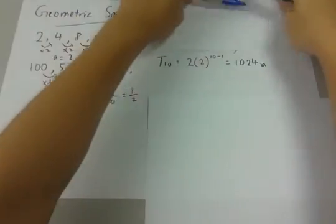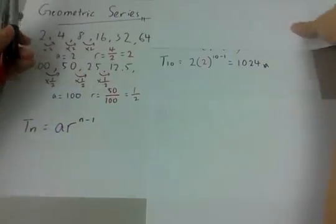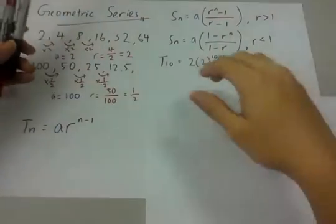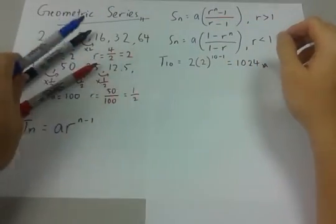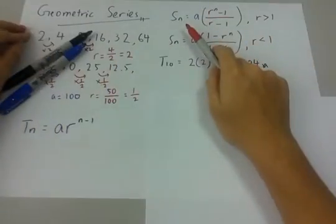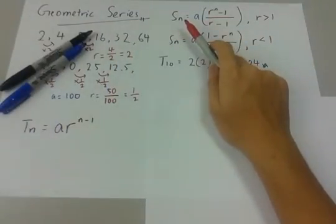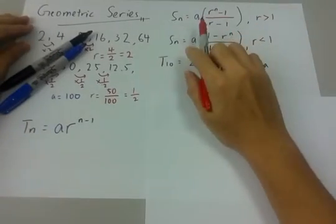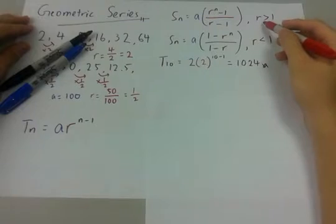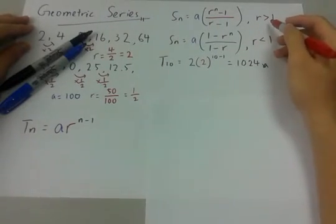Let us proceed with the sum of the geometric series. As you can see, there are two formulas here. The first formula: Sn, we denote sum of the geometric series as Sn.